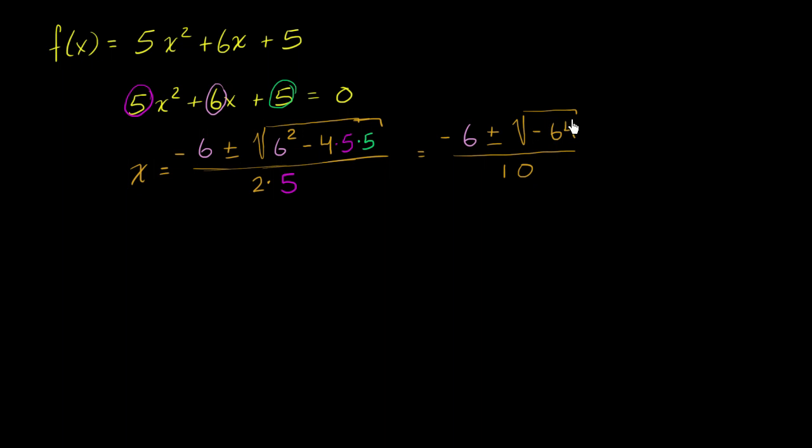Now this is interesting. We are trying to take the square root of a negative number. Or another way of thinking about it, b squared minus 4ac, which is oftentimes called the discriminant of this quadratic, is less than 0.